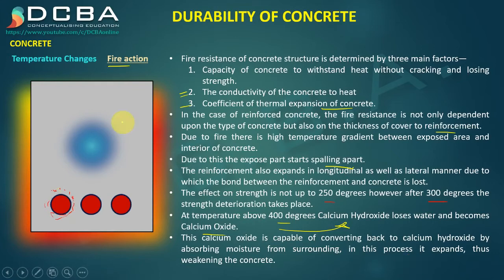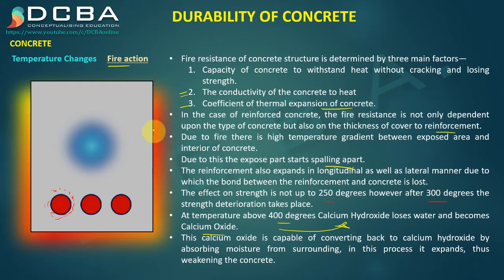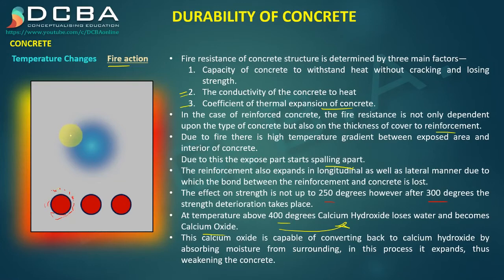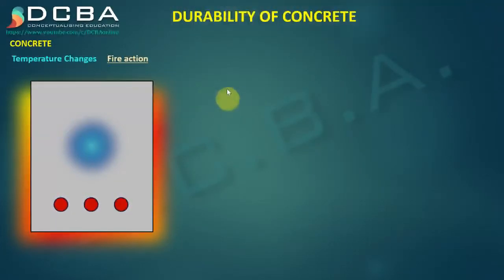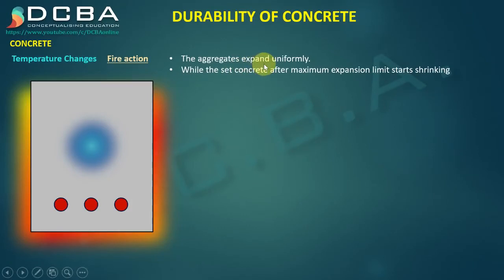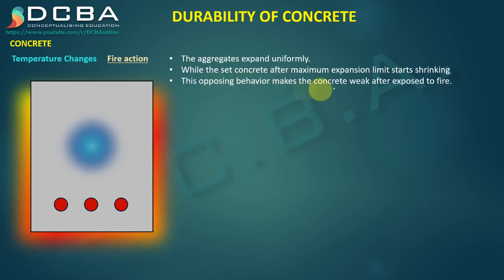In RCC, aggregates also play a role under fire. Most aggregates linearly expand under heat, but concrete itself starts contracting after a certain degree of expansion. Since steel and aggregates are expanding while the concrete matrix contracts beyond a limit, this opposing behavior further weakens the concrete after exposure to fire.